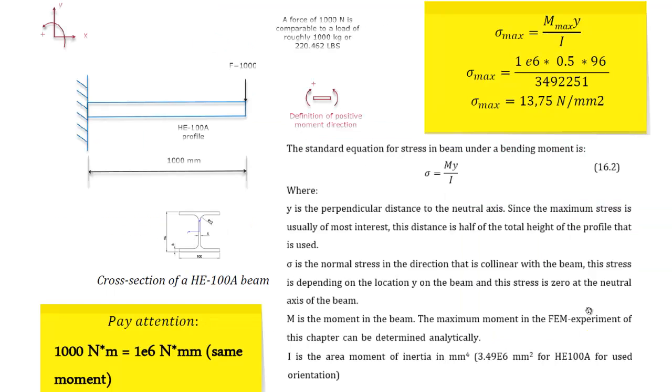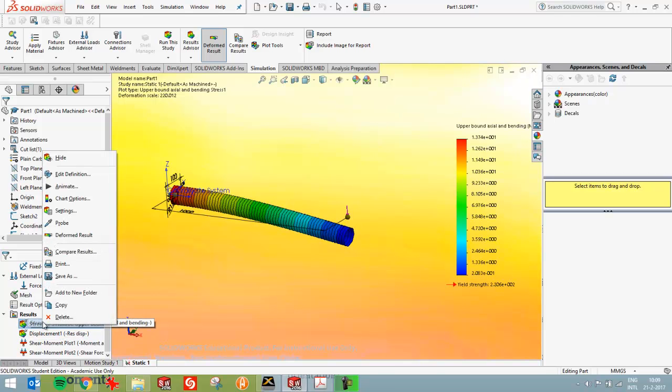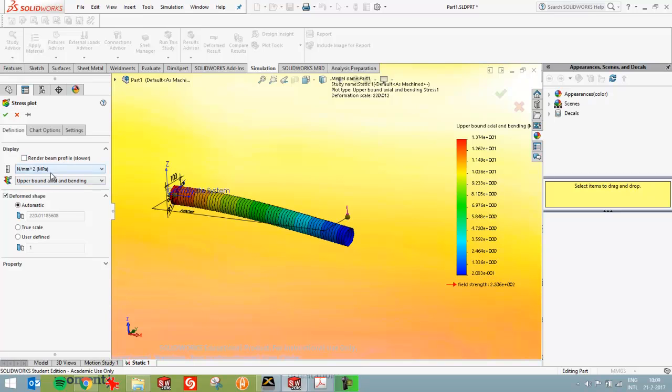So then let's look at the stress as well. You can calculate the maximum stress with the maximum moment times the Y value. So the distance from the center to the outside. That's the Y value divided by the I value that I've already previously shown how to calculate it with help of SolidWorks. And when you fill out the numbers in millimeters consistently again, as I've done over here, you get a maximum stress. In this case of 13.75 Newton per square millimeter. Let's have a look at that then.